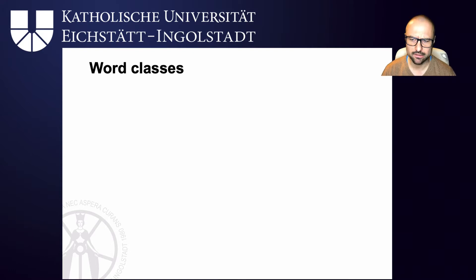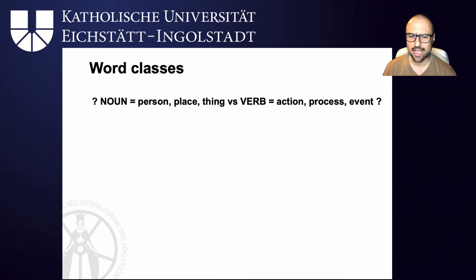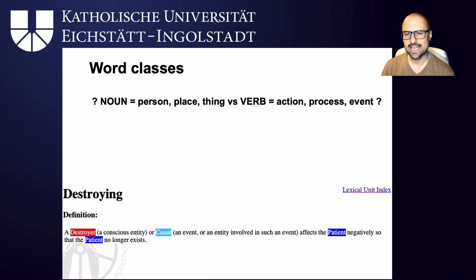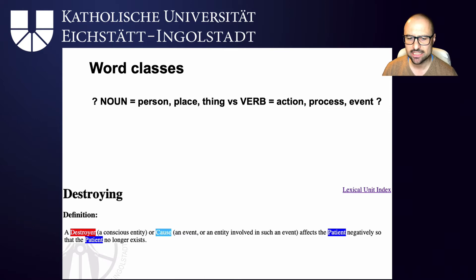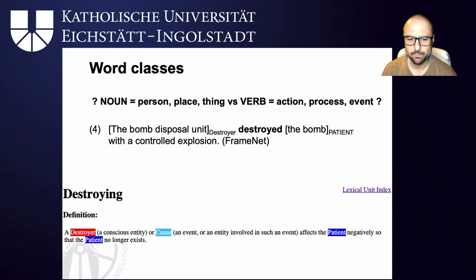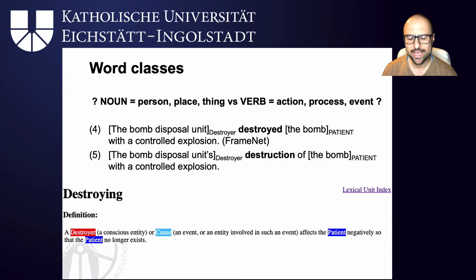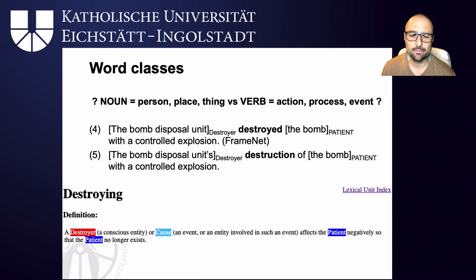Let's take a closer look at what word classes are. You may remember from school that nouns were described as a person, place, or thing, and verbs as describing actions, processes, or events. If you've taken an introductory linguistics class, you know this is a problematic definition. Take the destroying frame, in which a destroyer affects a patient negatively so that the patient no longer exists. This scene can be described with the verb 'destroyed' — 'the bomb disposal unit destroyed the bomb' — or the noun 'destruction' — 'the bomb disposal unit's destruction of the bomb.' So the same frame can be denoted by a verb or a noun.